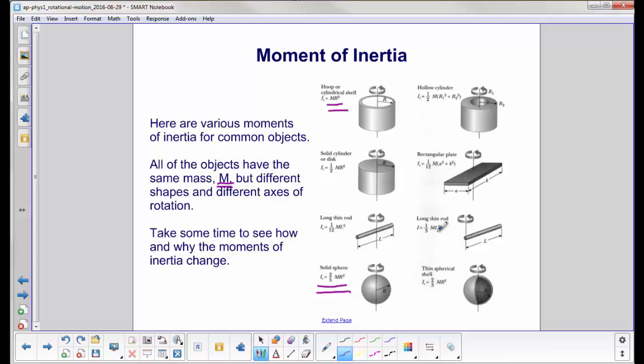Another thing we can do is take the exact same shape. Here we have a long thin rod. Here we have a long thin rod again. We rotate this guy about the middle, has a moment of inertia of 1 12th ml squared, where l is the length of the rod.